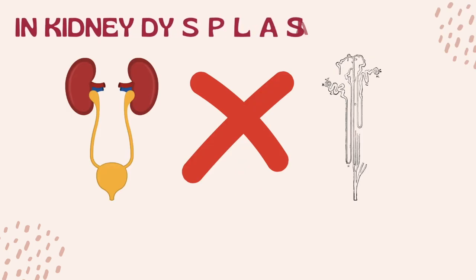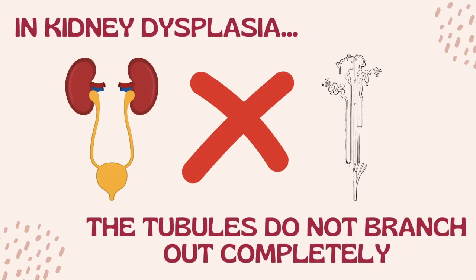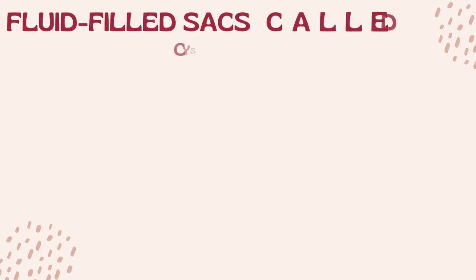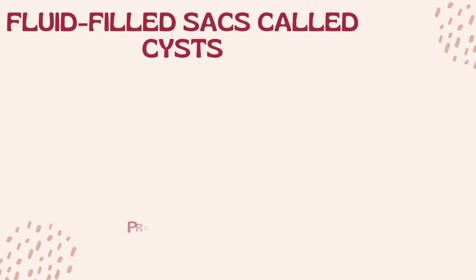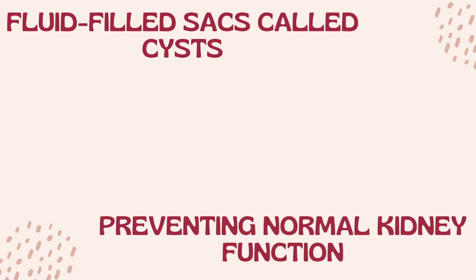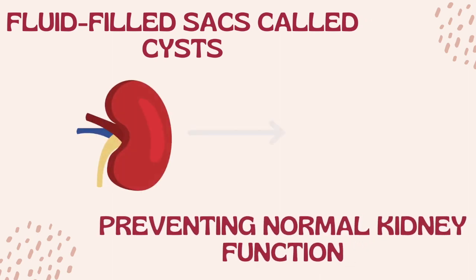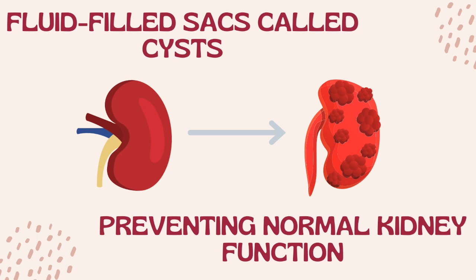In kidney dysplasia, the tubules do not branch out completely, and so the urine that would normally flow through the tubules has nowhere to go, and so the urine collects in the affected kidneys. This excess urine creates fluid-filled sacs called cysts which replace normal kidney tissue, affecting the normal development of kidney tissue and eventually preventing the kidney from functioning properly.